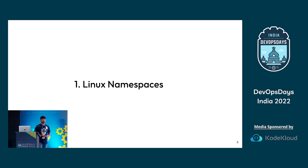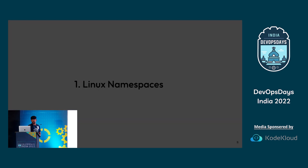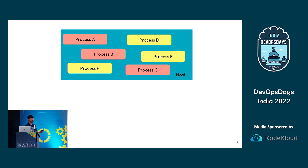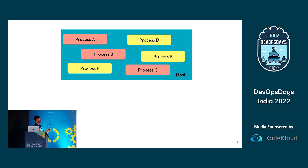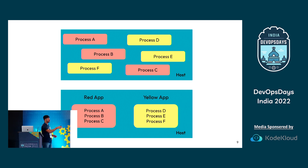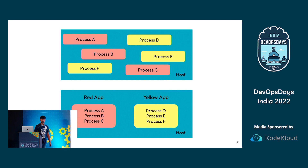Today we will take a detailed look into the network namespace. In the host machine I have processes of two applications — processes A, B, and C are from the red application and others from the yellow application. Each process can interfere with the other. But if I want both applications to run in isolation, I create two separate namespaces and run the red app processes in the red namespace and yellow app processes in the yellow namespace. They both share the host OS but still work in isolation — that's what namespaces help with.